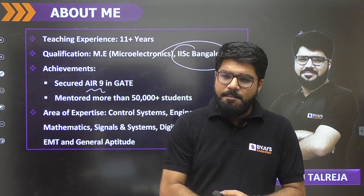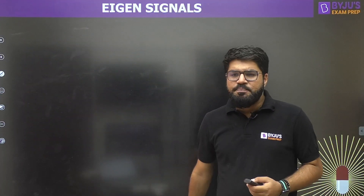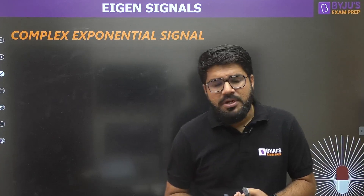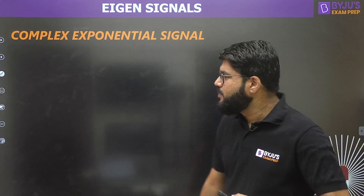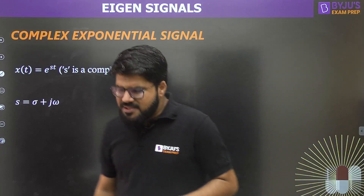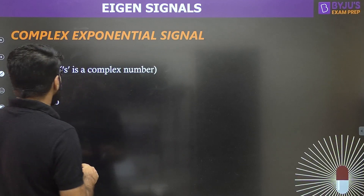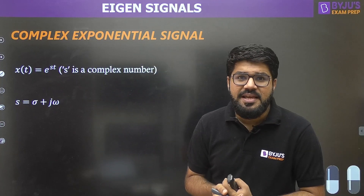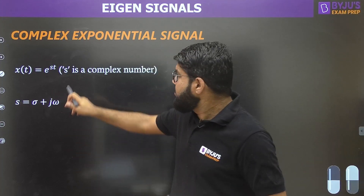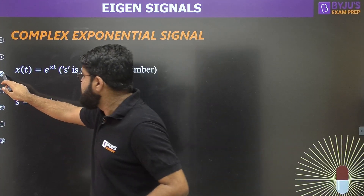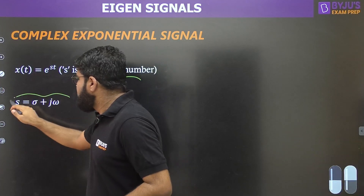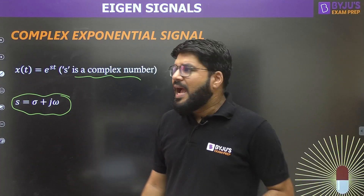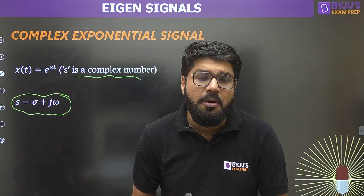To understand eigen signals, let me first start with a complex exponential signal. Why complex exponential? Let us consider a signal x(t) = e^(st). I call it a complex exponential because s — the factor in the exponent — is a complex variable of the form σ + jΩ. The signal e^(st) where s is a complex variable is simply known as a complex exponential.